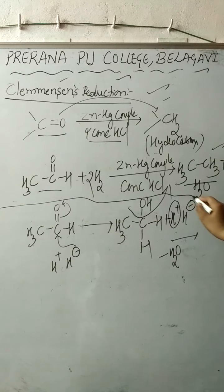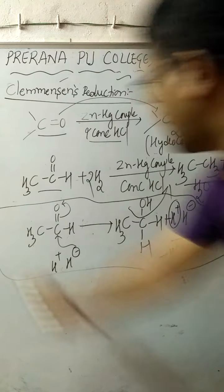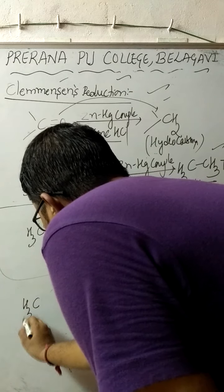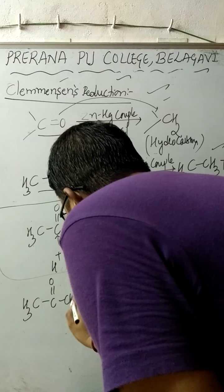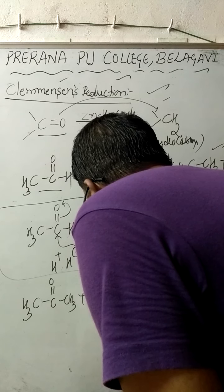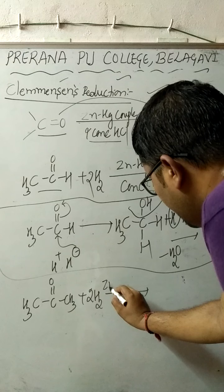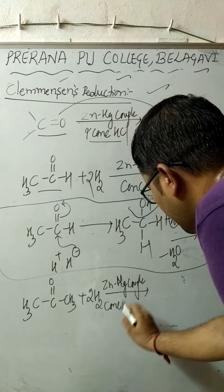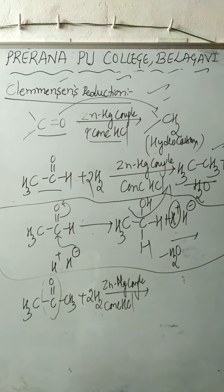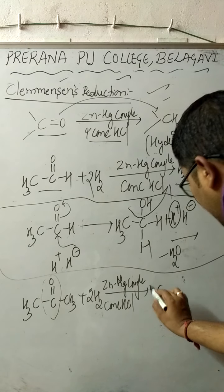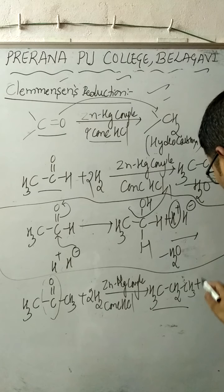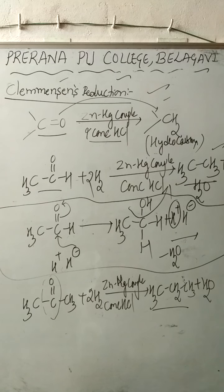Similarly, when acetone (CH3-C(=O)-CH3) is subjected to Clemmensen's reduction with zinc-mercury couple and concentrated HCl, the C=O group is converted into CH2, giving CH3-CH2-CH3, which is propane, along with formation of water. This is Clemmensen's reduction.